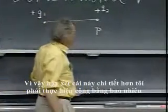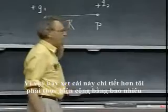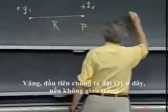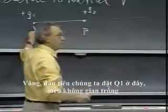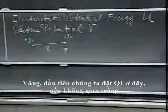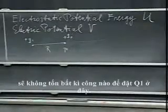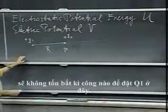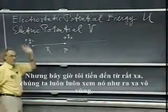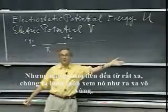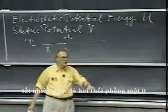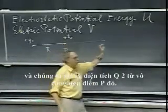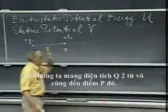So let's work this out in some detail, how much work I have to do. Well, we first put Q1 here. If space is empty, this doesn't take any work to place Q1 here. But now I come from very far away. We always think of it as infinitely far away. Of course, that's a little bit of an exaggeration. And we bring this charge Q2 from infinity to that point P.